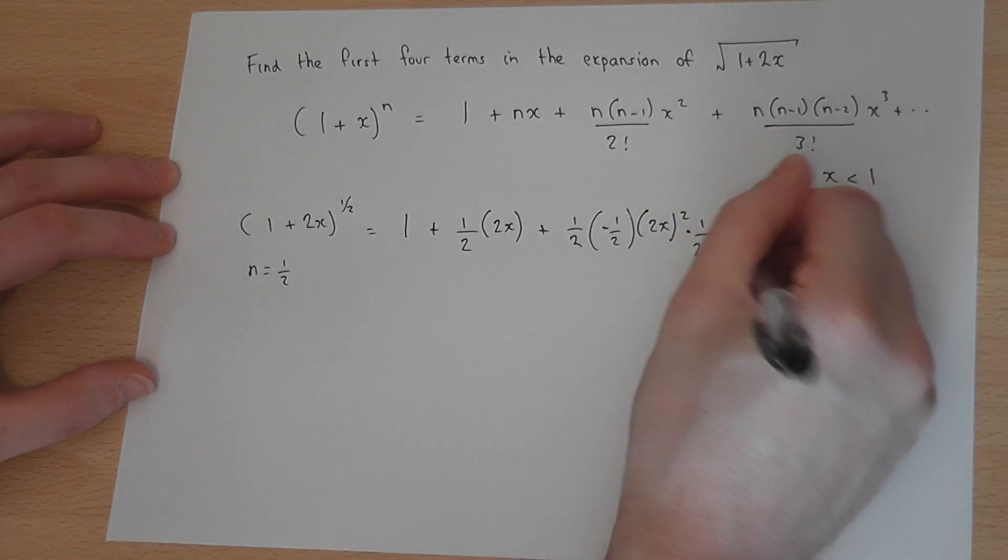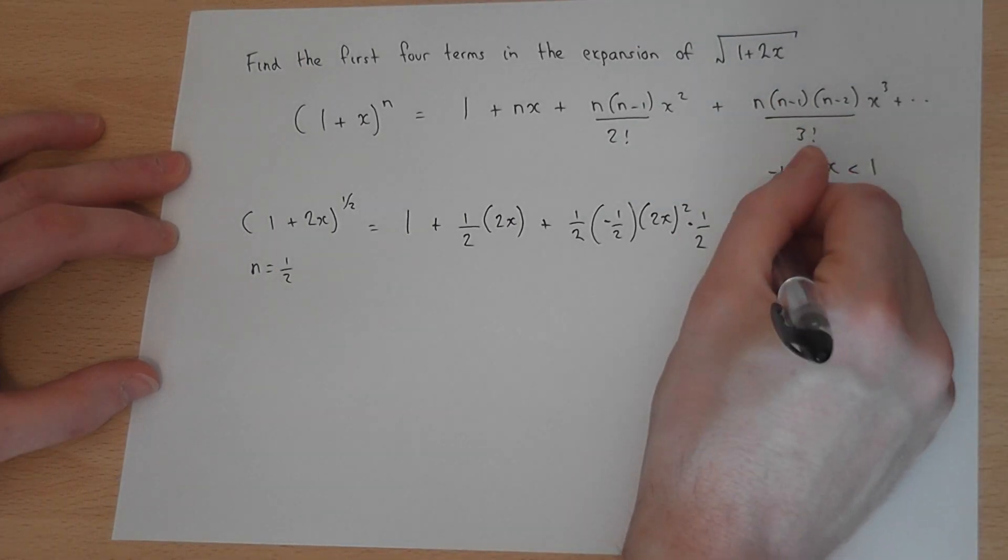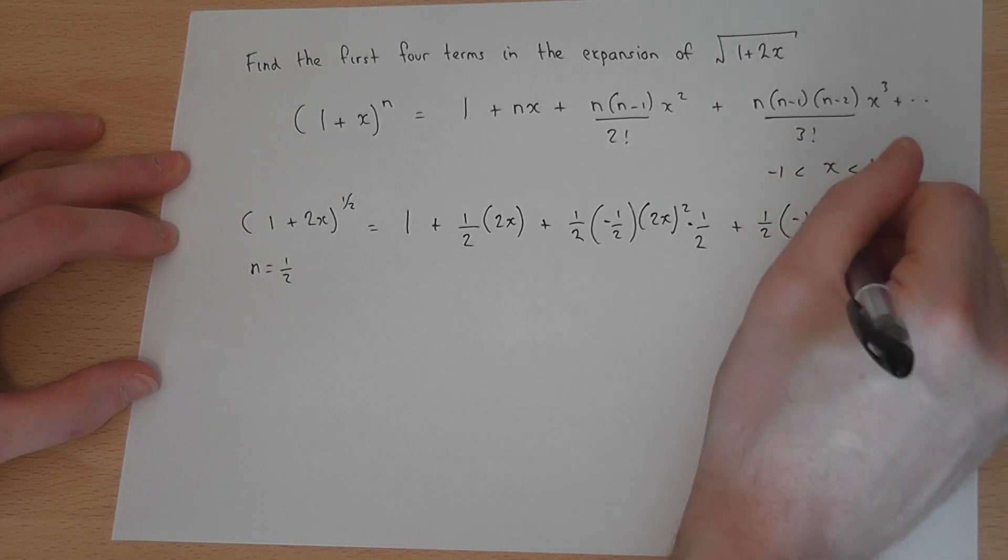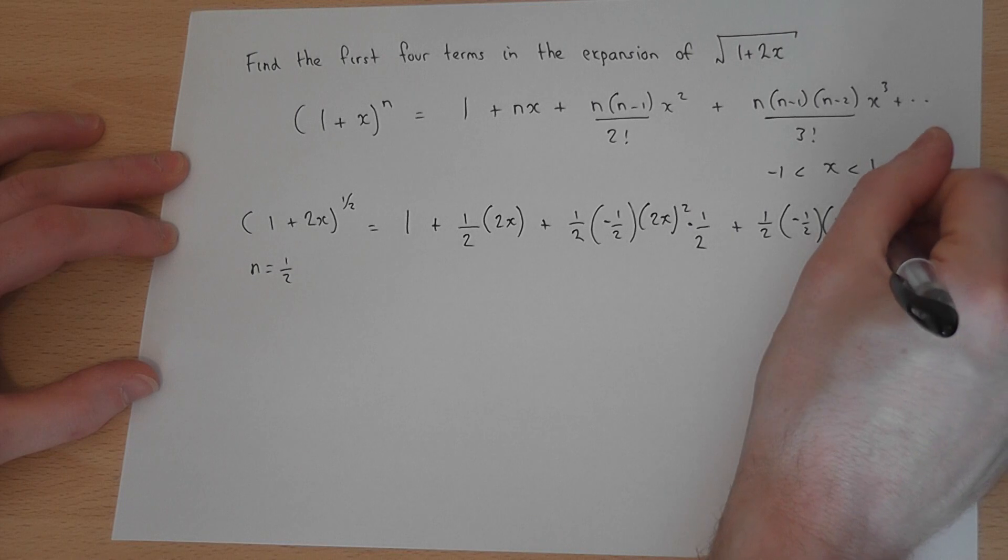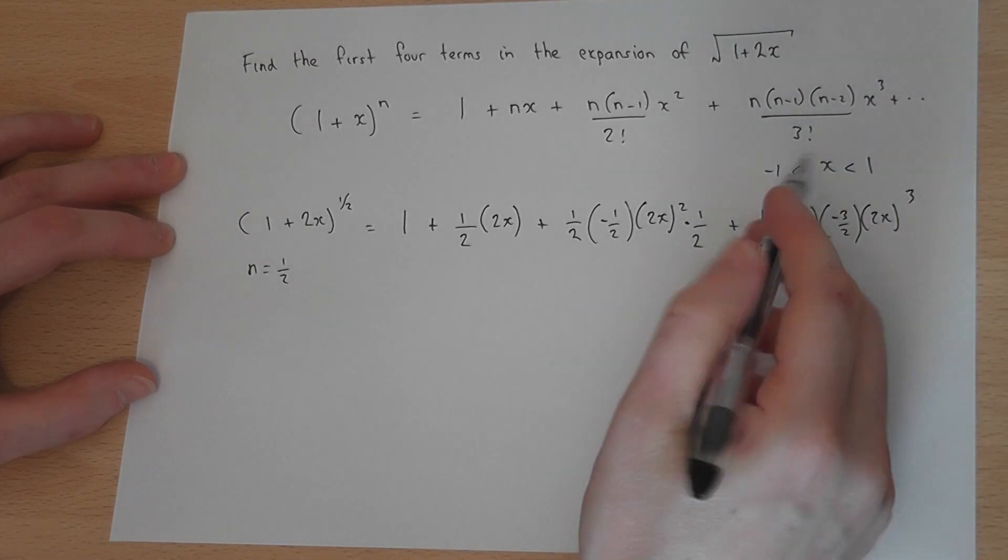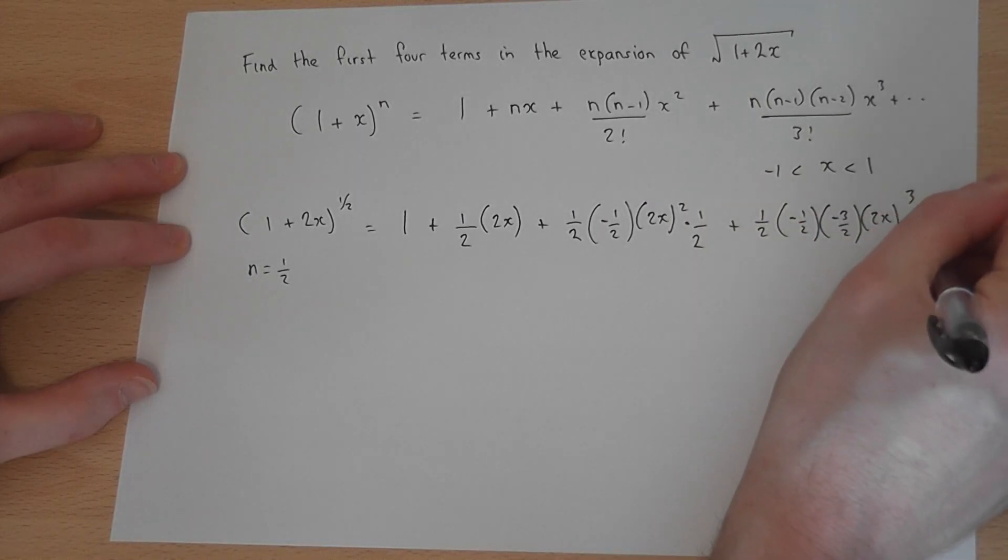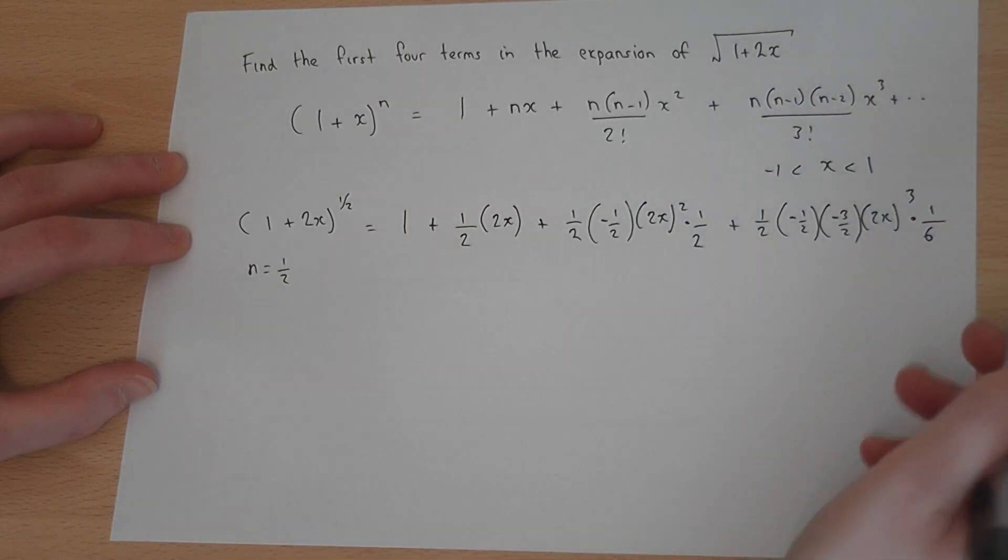And then the fourth term will be, n is a half, n take 1 is minus a half, n take 2 will be minus 3 over 2, times by 2x all cubed, and then it's all over 3 factorial, which is all over 6. So that's times by a sixth, plus dot dot dot.